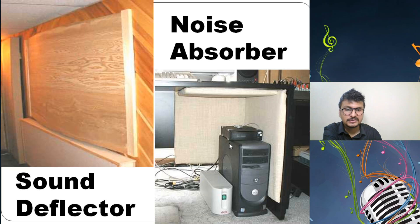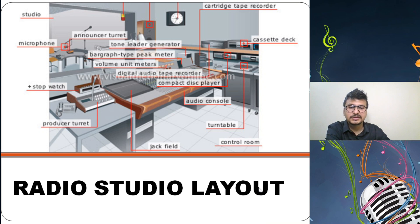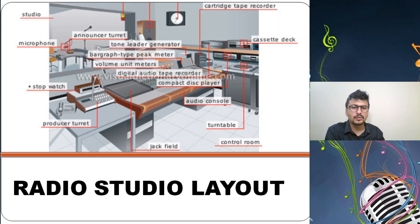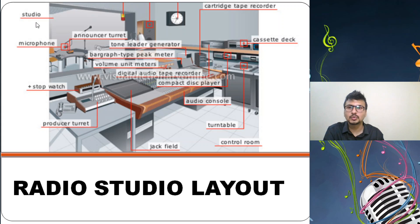Here is a radio studio layout — a simple labeled diagram. The entire studio is shown. You can see mics on tripod stands — this is the microphone. Below is the announcer turret with wiring. A stopwatch is kept, synchronized with the GPS of the radio station, displaying time in hours, minutes, and seconds.